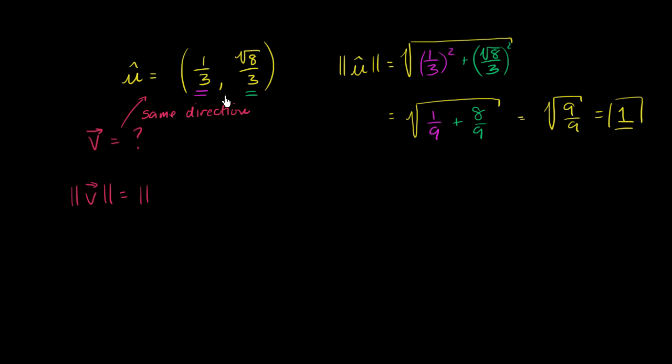Well, one way to think about it is if we just scale each of the components of u up by 11, then we will have gone in the same direction, but now we will have a magnitude 11 times as big. And if we started with a magnitude of 1, we'll now have a magnitude of 11.